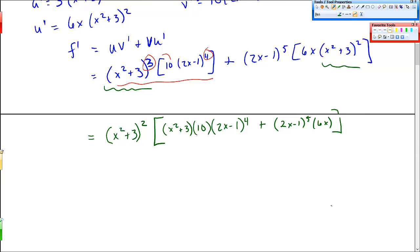And now when I look at this inside there's another common factor I can factor out, which is this 2x minus 1. It's here and here. And the smallest exponent is to the fourth. So I'll factor that out. So now in addition to this x squared plus 3 squared out front, I'll get a 2x minus 1 to the fourth. And I'm left with x squared plus 3 times 10 plus 2x minus 1 times 6x.